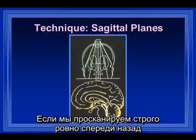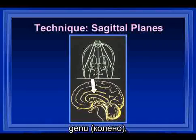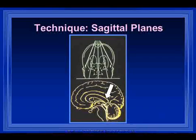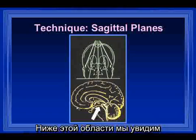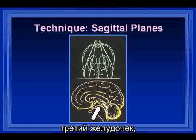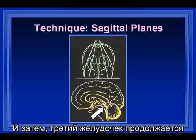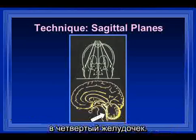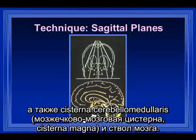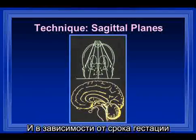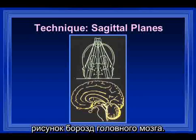As we scan in a straight anterior-posterior plane in the midline, we will see the corpus callosum — the genu, the body, and the splenium. Just below the corpus callosum we will have the cavum septum pellucidum, and below that the third ventricle. We will see the masa intermedia when that ventricle is enlarged. This continues through the aqueduct of Sylvius to the fourth ventricle. We will visualize the cerebellum, the cisterna magna, and the brain stem. Depending upon the gestational age of the infant, we may or may not see the convolutional markings of the brain.